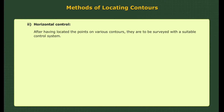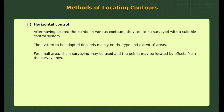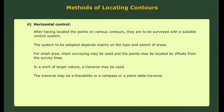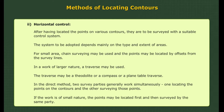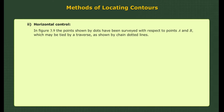Horizontal control. After having located the points on various contours, they are to be surveyed with a suitable control system. For small areas, chain surveying may be used and the points may be located by offsets from the survey lines. In work of larger nature, a traverse may be used — either a theodolite, compass, or plane table traverse. In the direct method, two survey parties generally work simultaneously: one locating the points on the contours and the other surveying those points. In figure 3.9, the points shown by dots have been surveyed with respect to points A and B, which may be tied by a traverse.